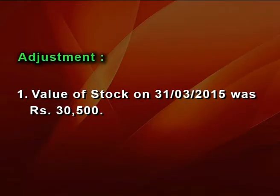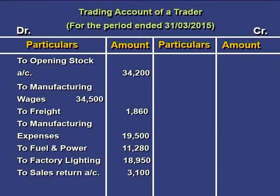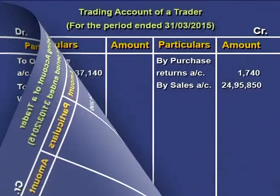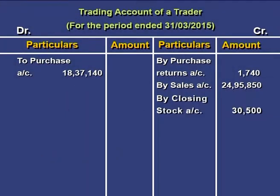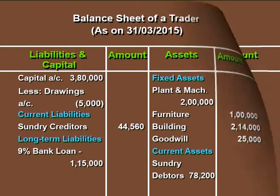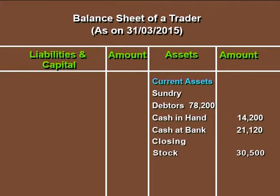Let us take the first adjustment. Value of stock on 31st March 2015 was Rs 30,500. Closing stock is reported at two places, so all adjustments will have two effects. This Rs 30,500 will be reported once on the credit side of the trading account, and then it is reported as a current asset in the balance sheet.